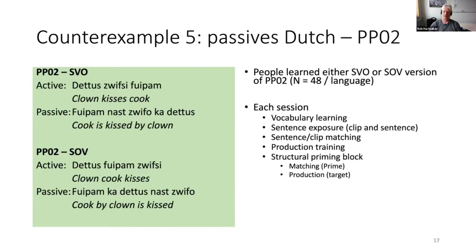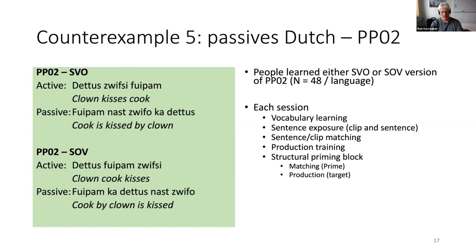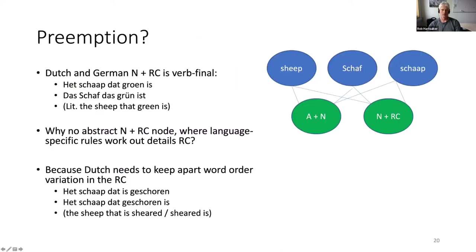Counter-example five comes from an artificial language study. The advantage of an artificial language is controlling every aspect, including word orders. We created an artificial language called PPO2 in two versions: one with SVO word order and another with SOV word order. People learned this in essentially one session and could already produce sentences. We then ran a structural priming task in our artificial language.